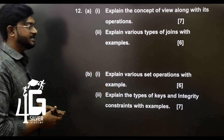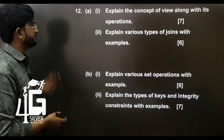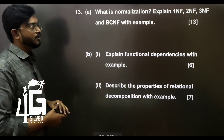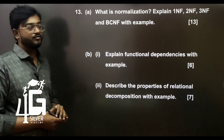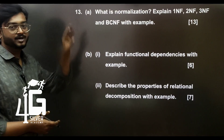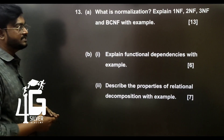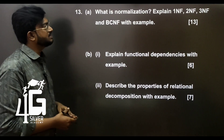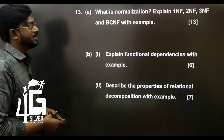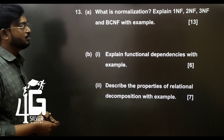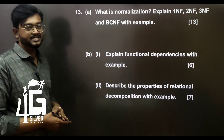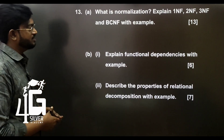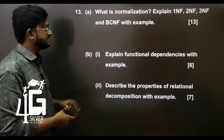Explain integrity constraints with an example. Next, Unit 3 important Part B question: The normalization concept — what is normalization? Explain 1NF, 2NF, 3NF, and BCNF with an example. Explain functional dependency with an example.